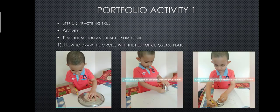The third step is Practicing Skill. The teacher instructs: 'Children, draw circles with the help of a glass and a plate.' In the first picture, a boy is drawing a circle using a plate. In the second picture, a boy is drawing a circle using a glass. In the third picture, a boy is again drawing a circle using a plate.